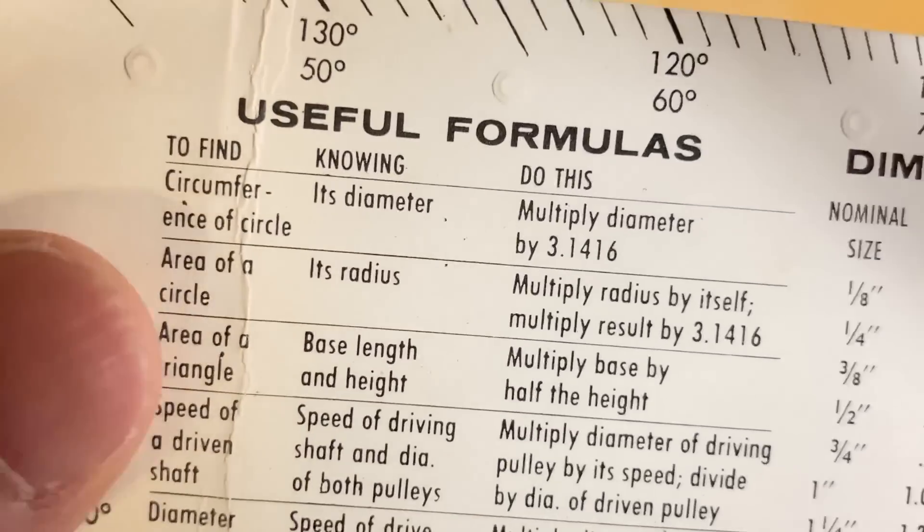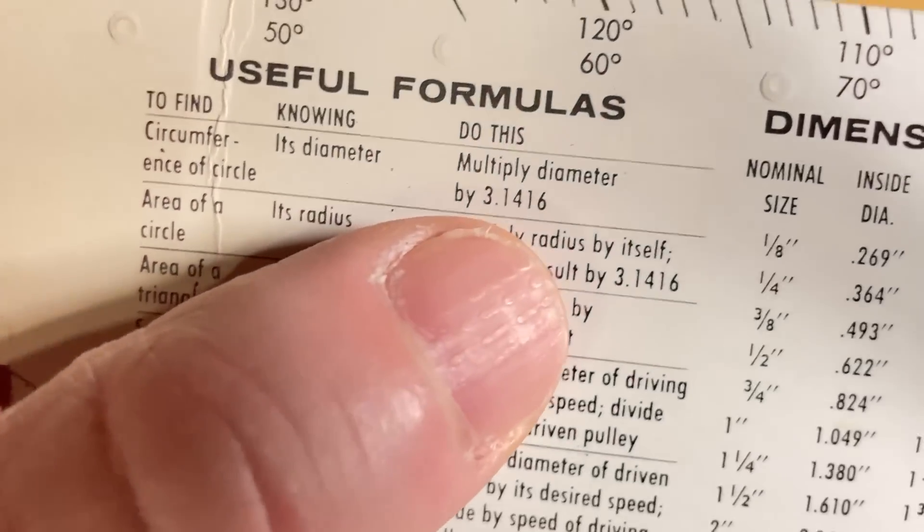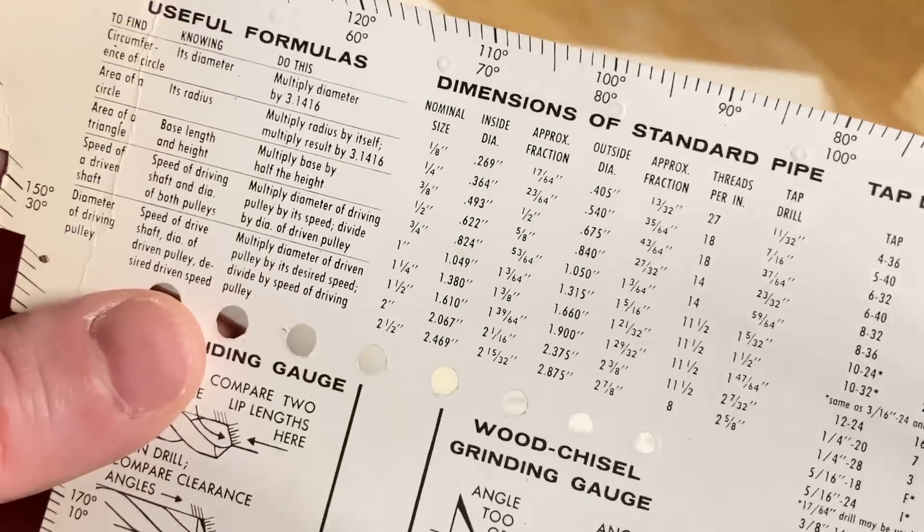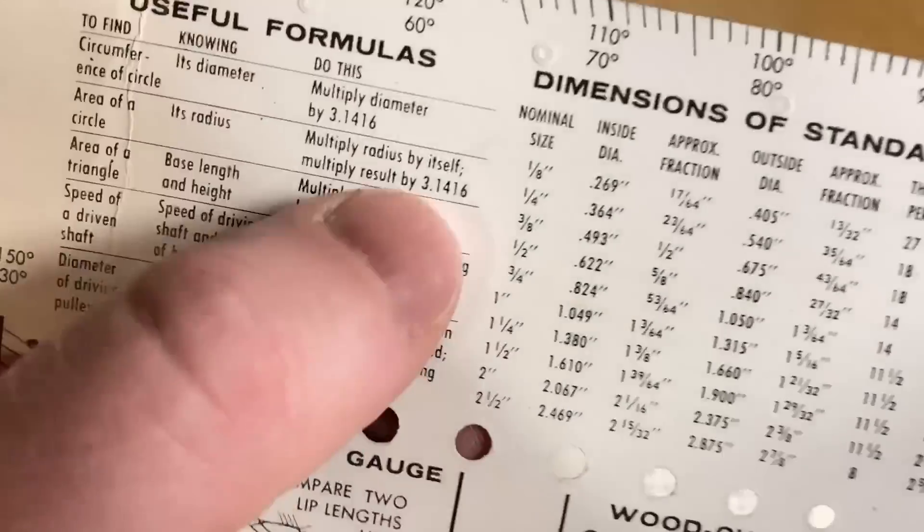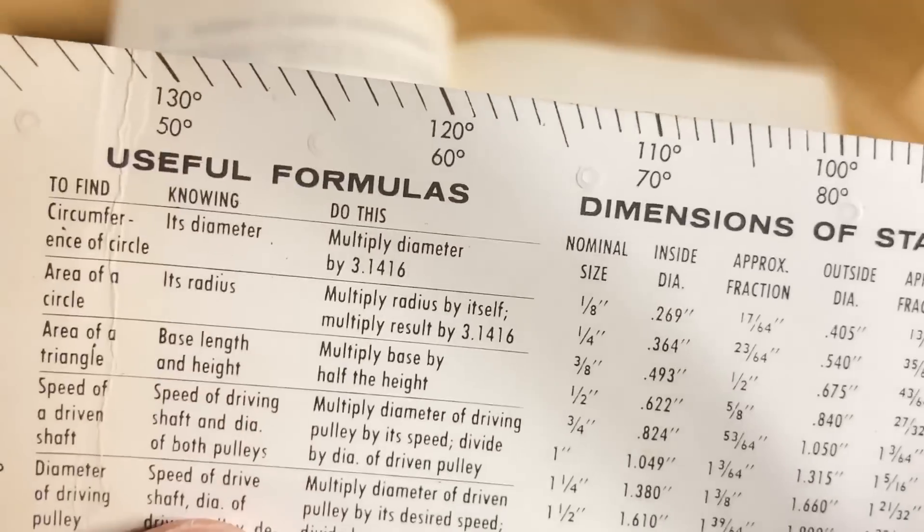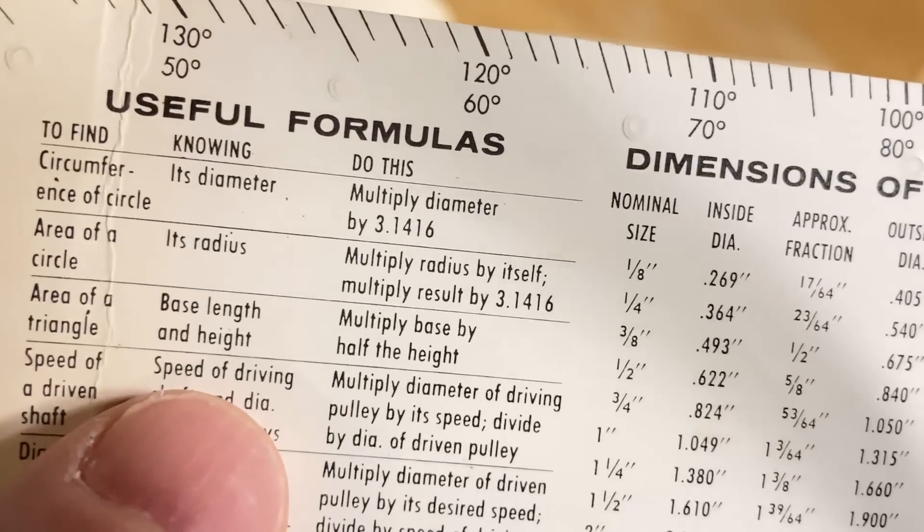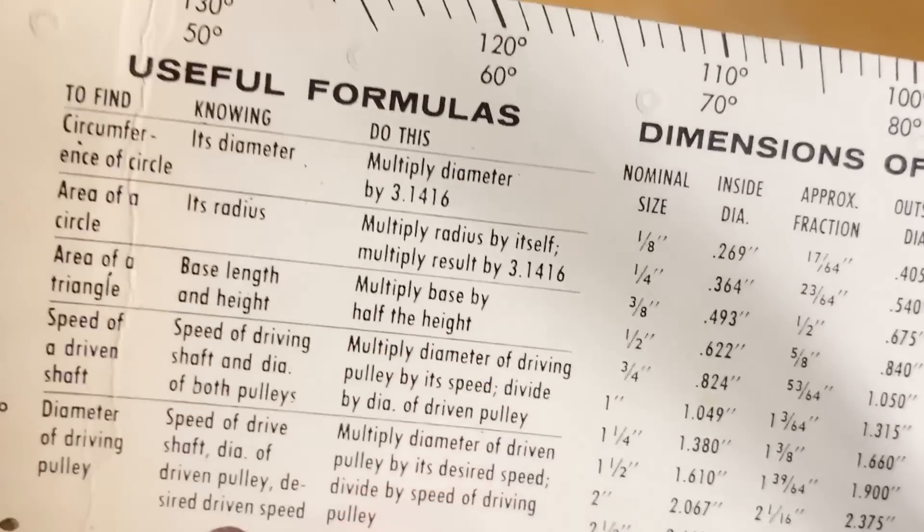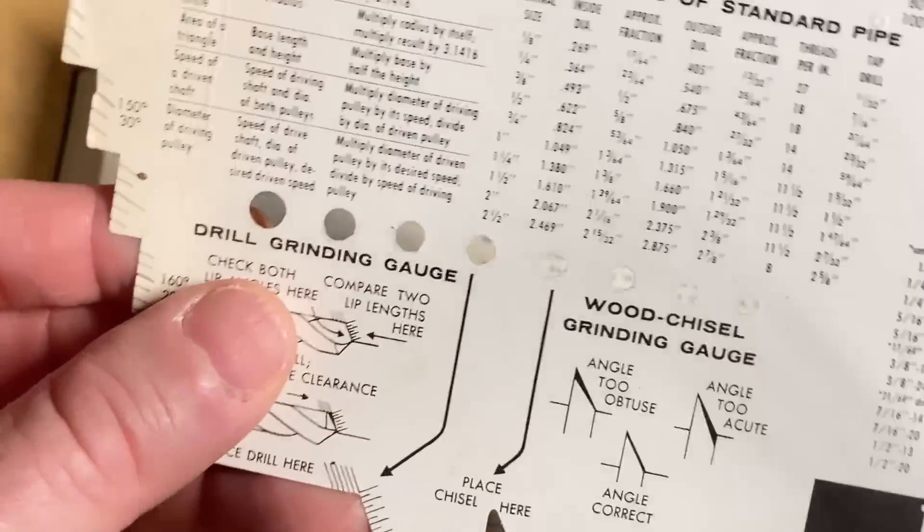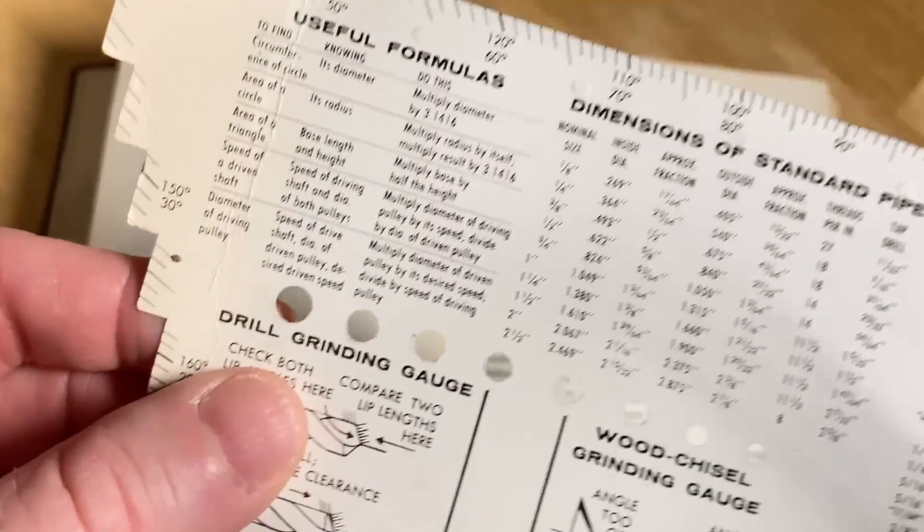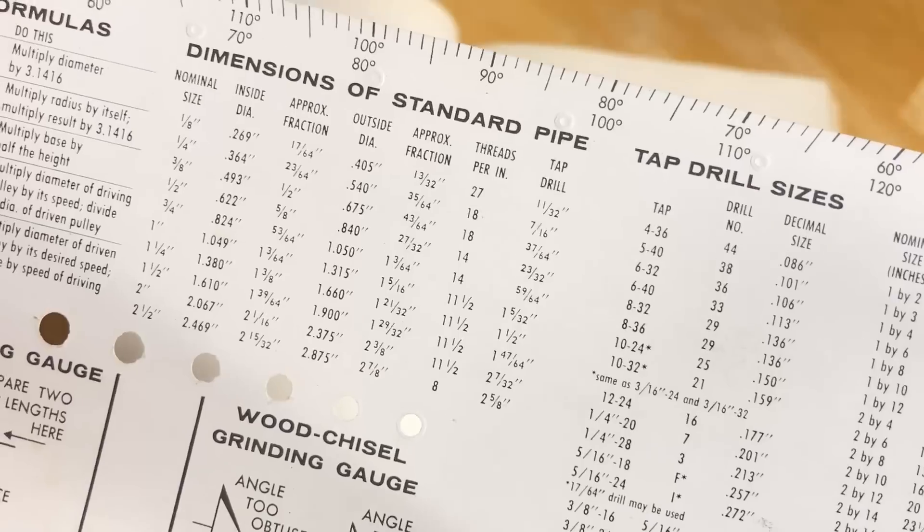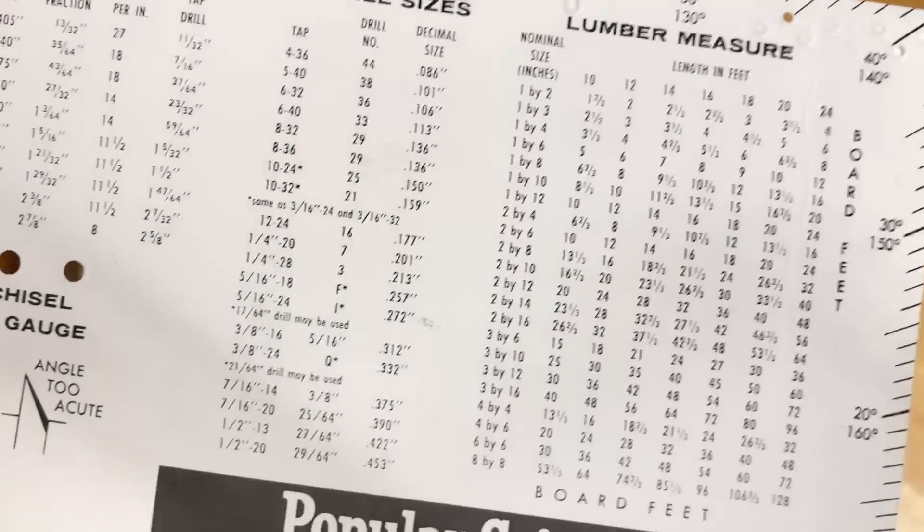To find the circumference of a circle, knowing its diameter, multiply diameter by 3.1416. Right, because the circumference is 2 pi r, so 2 r is the diameter, so it's really pi times d, so it's an approximation for pi, times d, which is the diameter. That's the formula for the circumference. Kind of cool. Area of a triangle, base, length, height. Multiply base by half the height. Yeah, the area of a triangle is 1 half base times height, so you would multiply the base by half the height. That would work as well. Same thing, right?